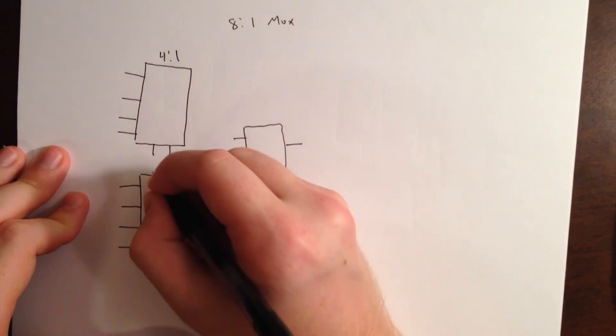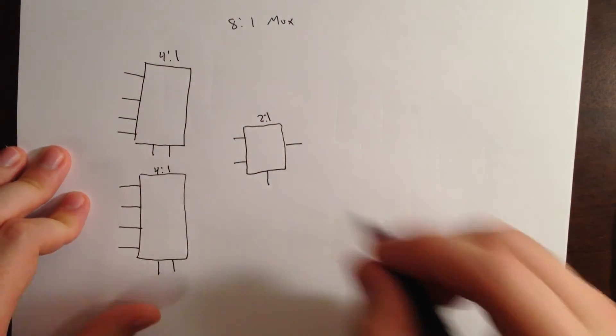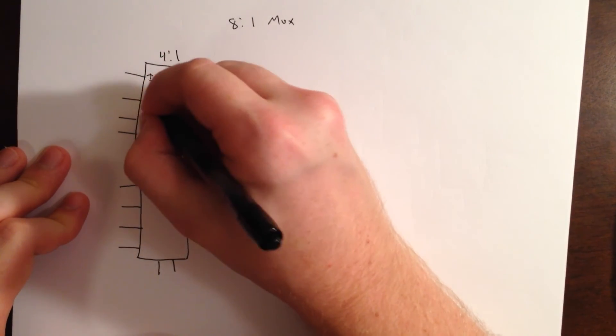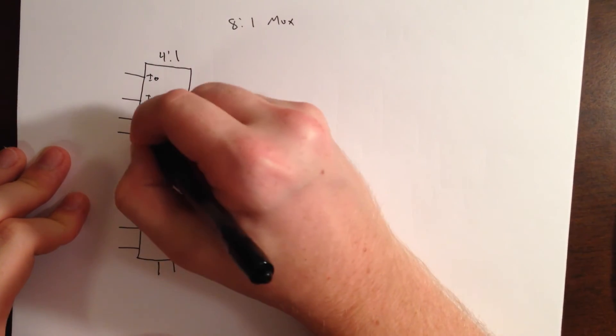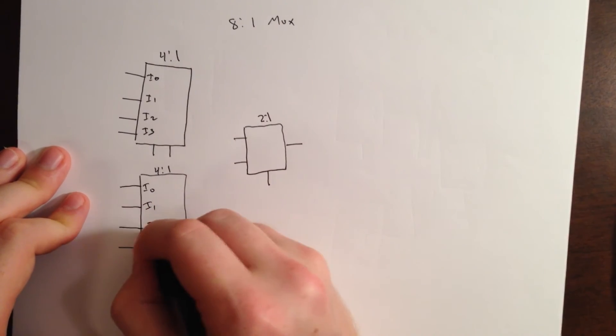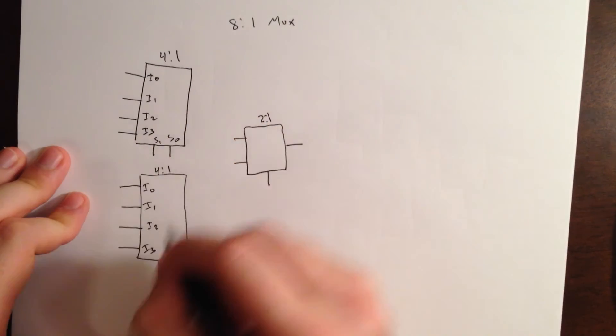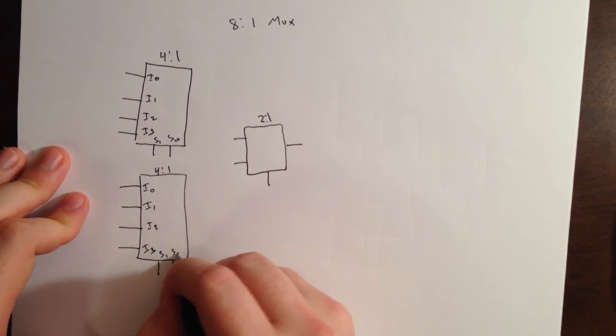So, this is our 4:1, 4:1, and 2:1. And, this will be our I0, I1, I2, I3, I0, I1, I2, I3, S1, S0, S1, S0.